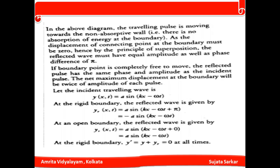At the open boundary, the reflected wave is given by y(x, t) = A sin(kx − ωt + 0) = A sin(kx − ωt), since sin(0) = 1 effectively means no phase inversion. At the open boundary, y' = y₁ + y₂.